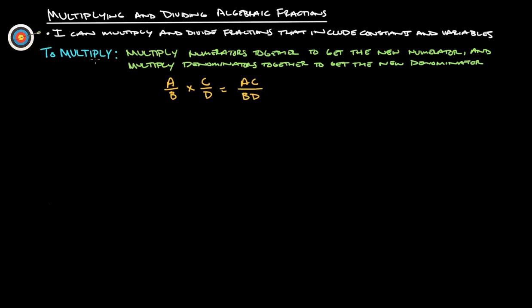First things first, to multiply. Multiply numerators together to get the new numerator and then multiply denominators together to get the new denominator. That's for multiplication.